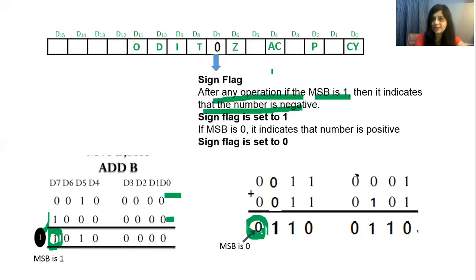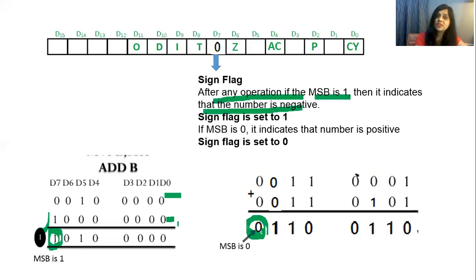That covers all the status flags: carry flag, parity flag, auxiliary carry flag, zero flag, and sign flag. After arithmetic and logical operations, these flags change on their own. By checking their status, we can see whether the result generated a carry, whether the result is zero, whether the result is positive or negative, and whether carry is generated from one nibble to another.